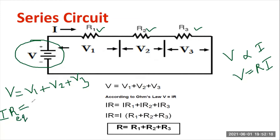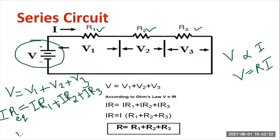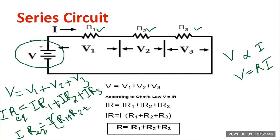Then, what about V1? According to Ohm's law, V1 equals I times R1, V2 equals I times R2, and V3 equals I times R3. Now, I is a common factor because the same current is flowing. So taking I as a common factor outside: I into (R1 plus R2 plus R3).